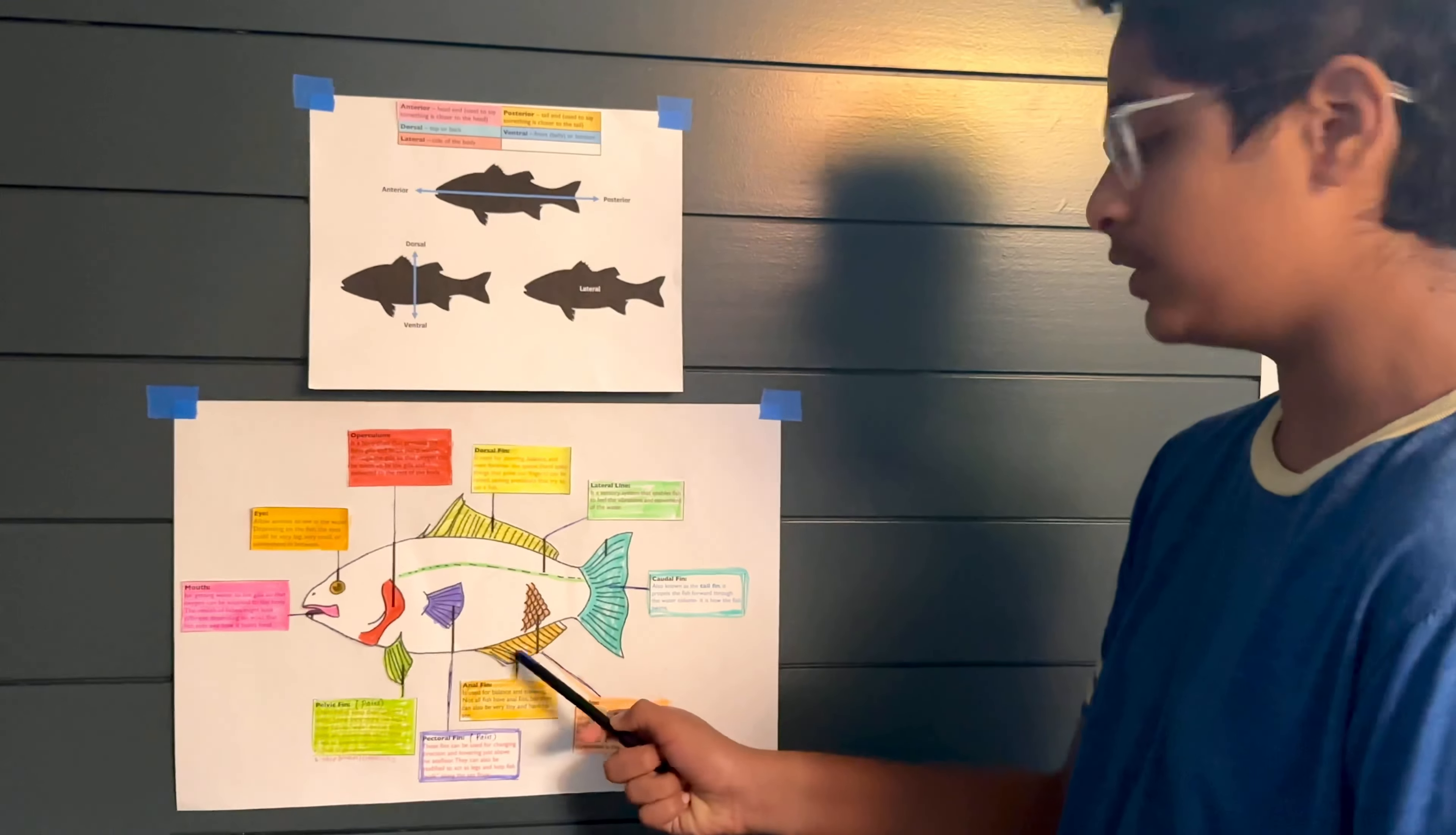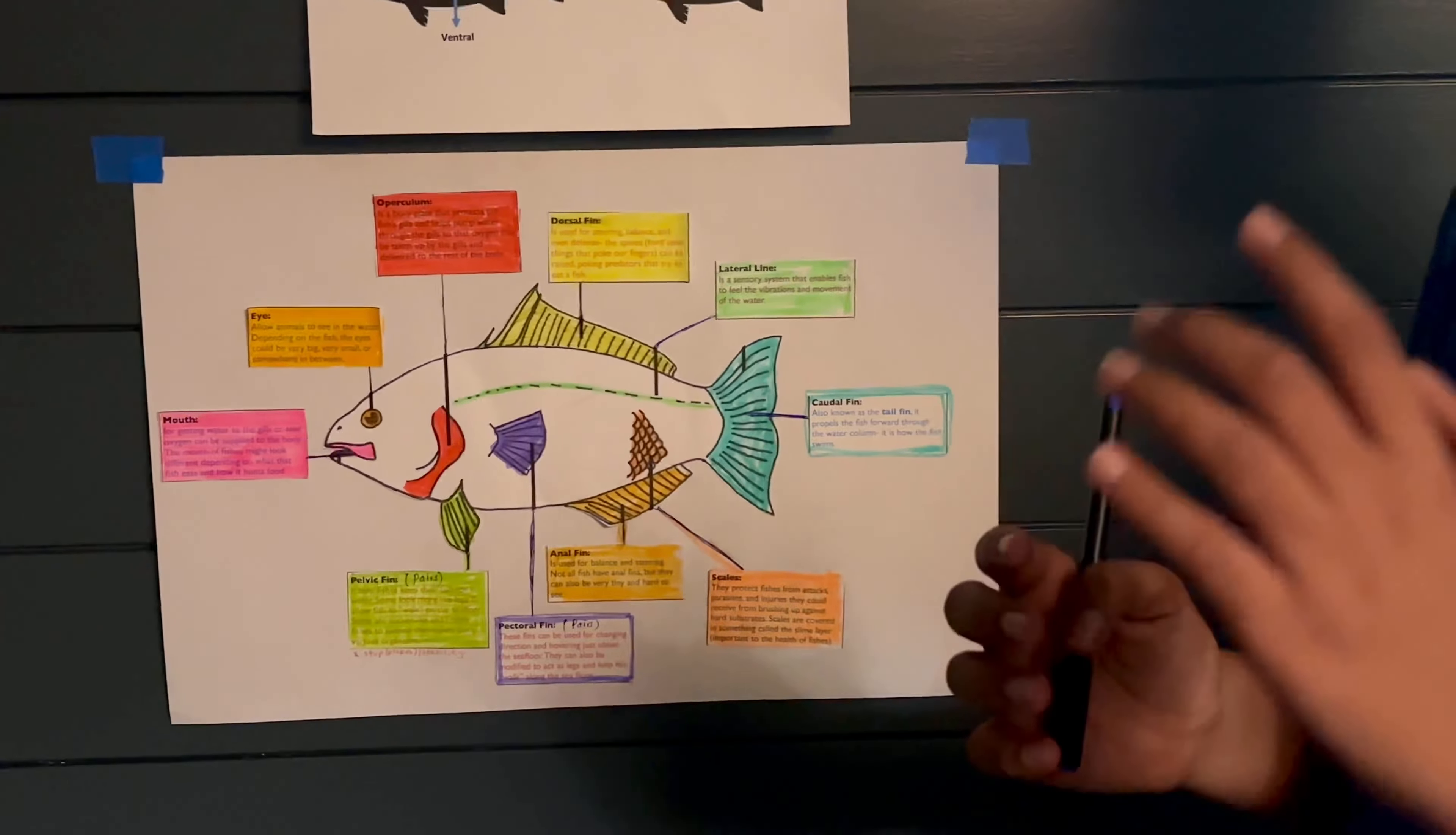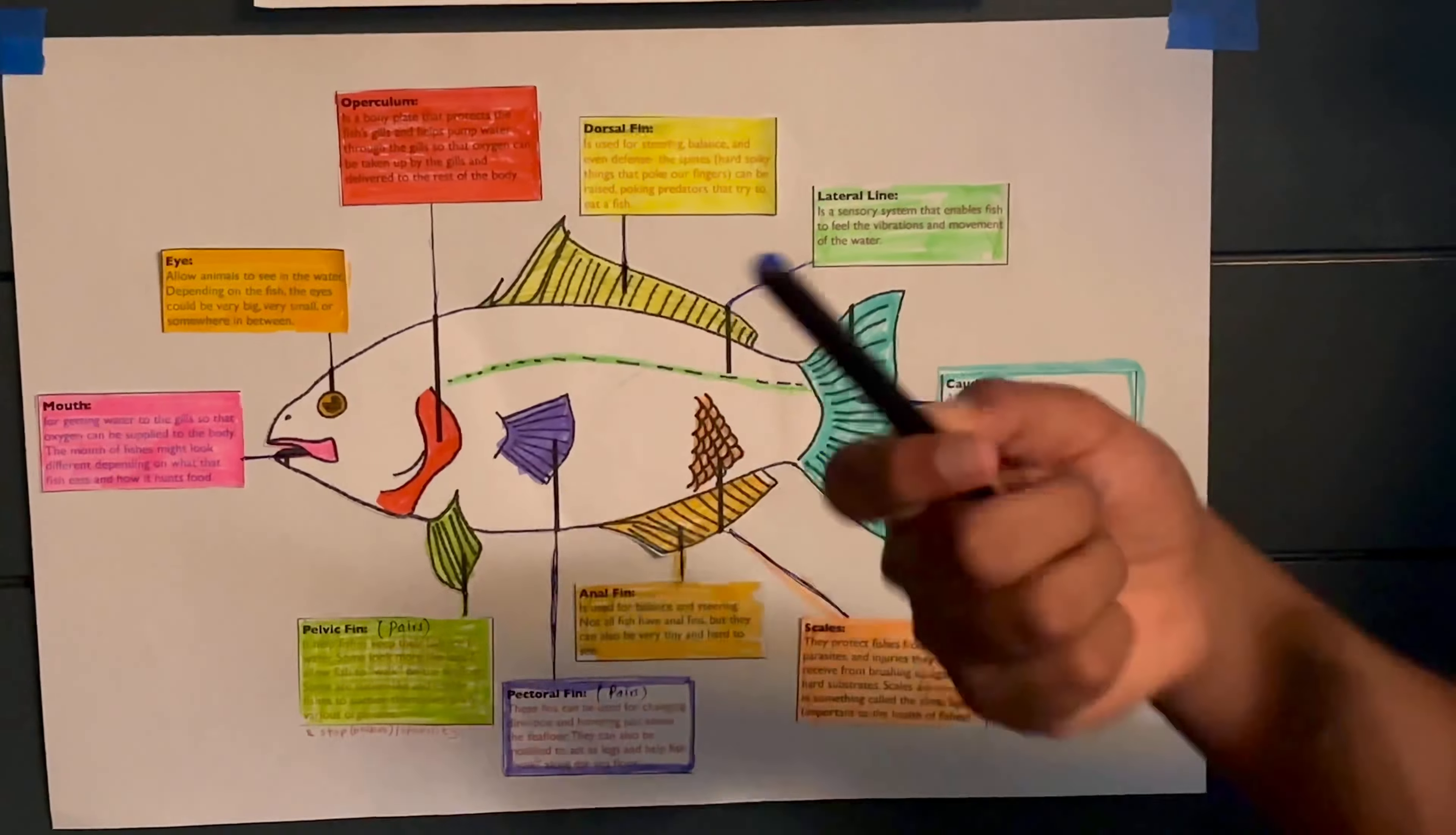Next is the anal fin. The anal fin is used for balance but it can also play an important role in steering, which is what the caudal fin does. The anal fin also helps with steering. However, it just helps in trying to dodge any rocks or anything under the fish so the fish doesn't face any obstacles or any injury from moving very fast.